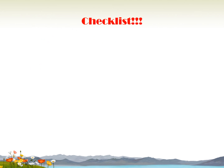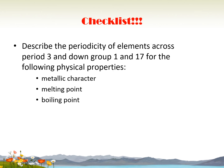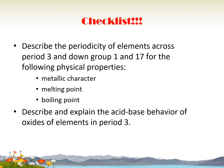So we have reached the end of lesson 21 for chapter 4, Predictable, in which we have described the periodicity of elements across period 3 and down group 1 and 17 for the following physical properties: metallic character, melting point and boiling point. And lastly, we have learned how to describe and explain the acid-base behavior of oxides of elements in period 3. That's all for this lesson. See you next time. Thank you.